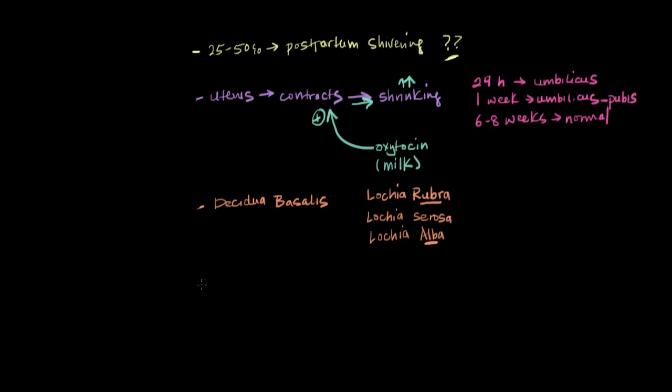And it's not just the uterus which contracts to become smaller. The cervix and the vagina do the exact same thing. So after delivery, the cervix, which is the opening of the uterus through which the baby passes through, as you can probably imagine, is pretty soft and floppy.